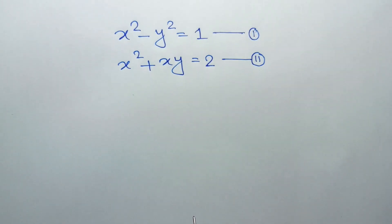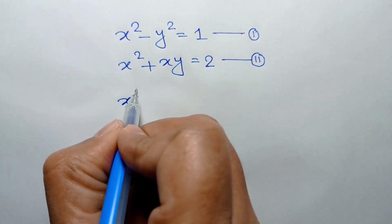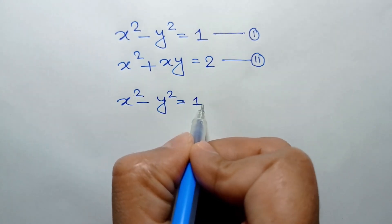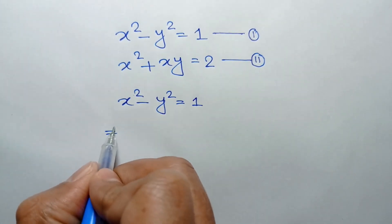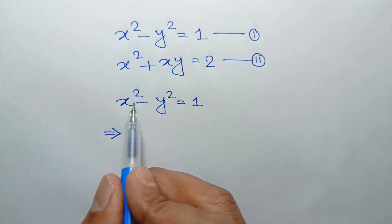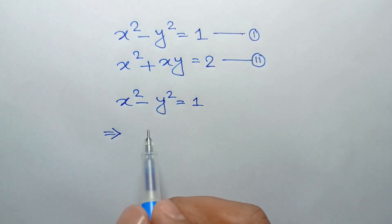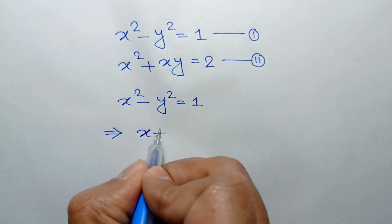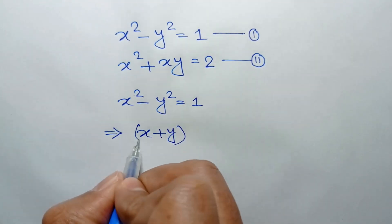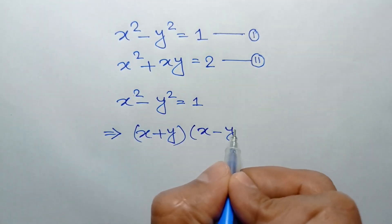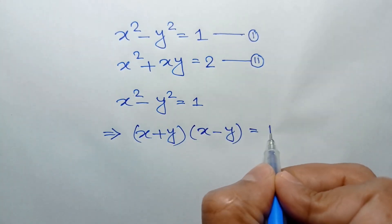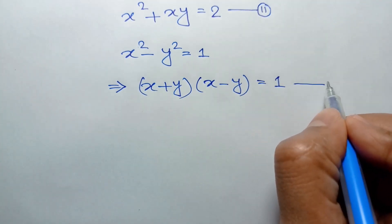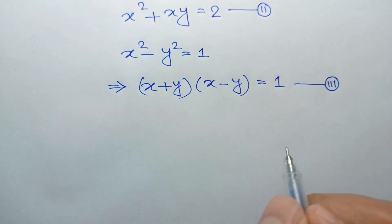From equation 1, we can write x squared minus y squared is equal to 1. Applying the identity a squared minus b squared equals a plus b times a minus b, we can write it as x plus y times x minus y is equal to 1. Let's call it equation number 3.